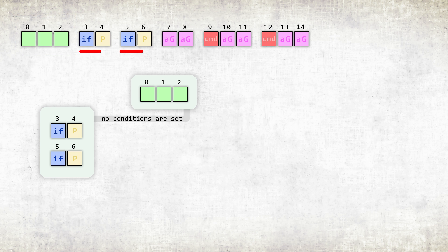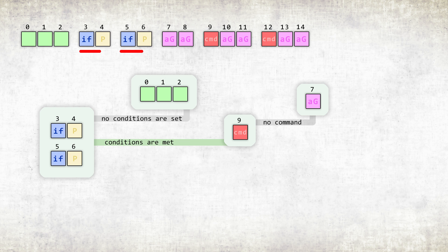But if conditions are set and all of them are met, then the cell tries to evoke the command encoded in the ninth number. If no command is encoded, the active gene is replaced by a gene encoded in the seventh number. If one of the conditions isn't met, the cell tries to evoke the command encoded in the twelfth number. If no command is encoded, the active gene is replaced by a gene encoded in the eighth number.